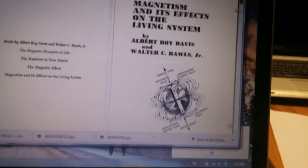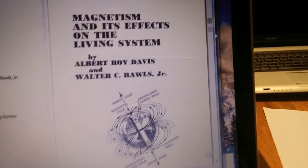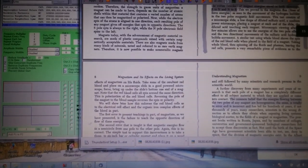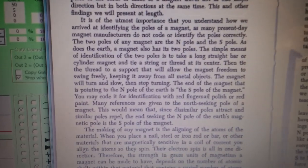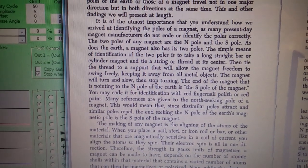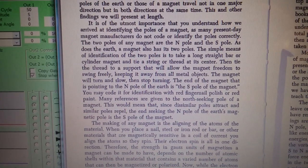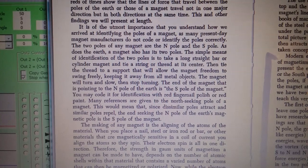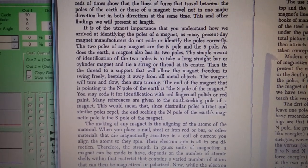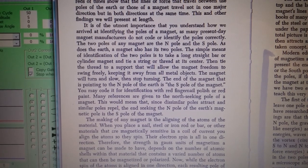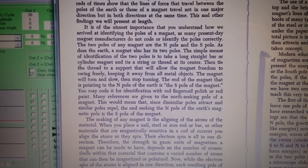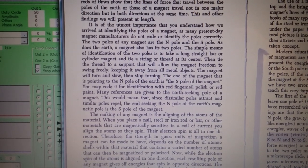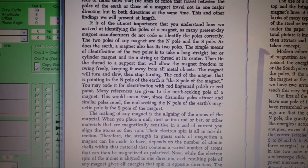On the 14th page of the PDF, the first full paragraph states it's important that you understand how we arrived at identifying the poles of the magnet, as many present-day magnet manufacturers do not code or identify the poles correctly. The two poles of any magnet are North Pole and South Pole, as does the earth.